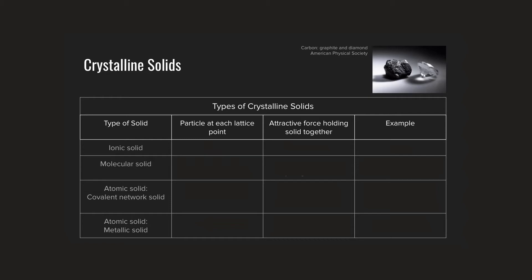Some of these solids you are very familiar with, solids like sodium chloride. We've discussed on a number of occasions before that sodium chloride exists as a lattice of oppositely charged ions held together by electrostatic attractive forces between the positively charged cations, like the sodium in table salt, and the negatively charged anions, like those chloride ions. At each particular lattice point within a crystalline lattice of sodium chloride, we see an ion — either a sodium ion or a chloride ion — and the attractive forces holding that lattice together are ionic bonds.